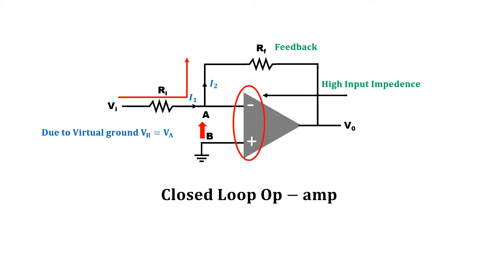Whatever voltage drop occurs at the non-inverting terminal of the operational amplifier, it always appears at node point A because of the virtual ground condition. An operational amplifier produces a voltage gain on the input voltage, the value of which depends on the operational amplifier. In this video, we will not discuss the concept of virtual ground and Kirchhoff's current and voltage rule, as videos on these topics are already available on our channel. The link is in the description.